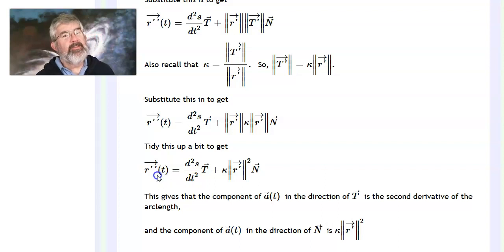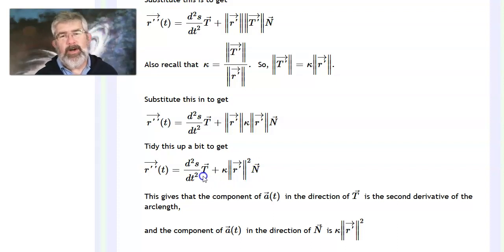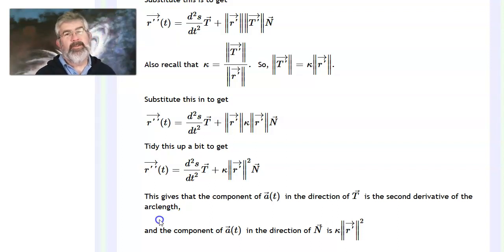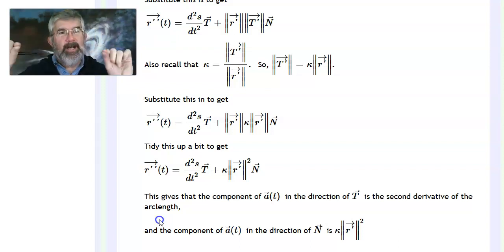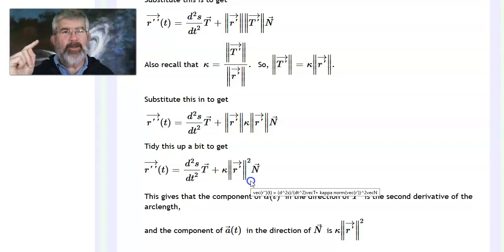That second derivative vector — the acceleration vector — is the second derivative of the arc length times the unit tangent vector, plus the curvature times the speed squared times the normal vector. The part of the acceleration in the direction of the tangent vector is s″, the second derivative of the arc length. Remember, the first derivative of the arc length is the speed, so the second derivative is the acceleration along the curve. If you think of any curve as being straightened out, the arc length is just straightened out, and that's just the acceleration.